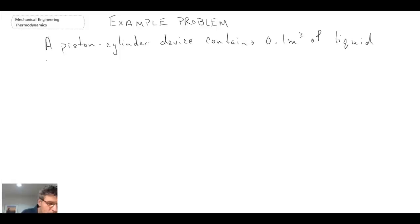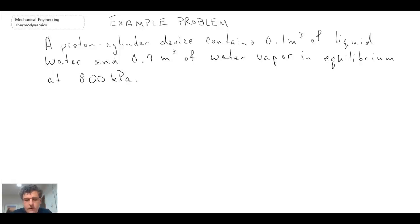So we're going to consider a piston cylinder device. This is an example problem. We have a piston cylinder device that contains 0.1 meters cubed of liquid water and 0.9 meters cubed of water vapor in equilibrium at 800 kPa.